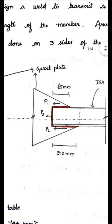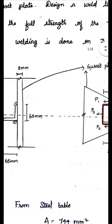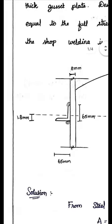The welding is done at three sides — at the end as well as at the sides. The CG of the angle section does not lie at the middle, unlike a plate. For angle sections, the CG is somewhere nearer to the outstanding leg — at a distance of 18.1 mm from the bottom edge. This value is obtained from the steel table.